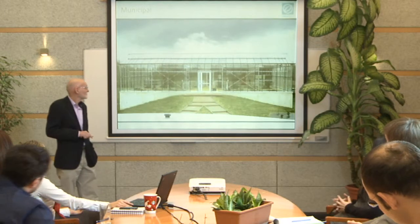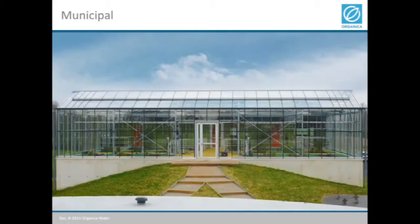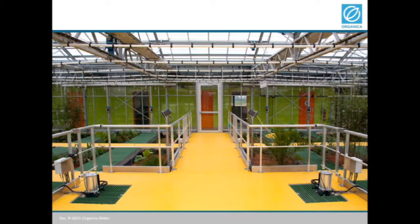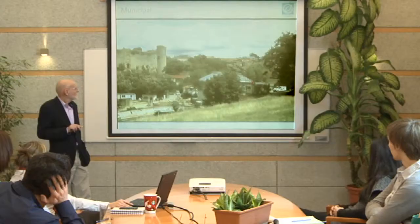A few examples I'd like to show — all municipal. This was one of the first plants built in France, in the Loire Valley, about a kilometer away from one of the nice châteaus. Our French friends have a very good sense of taste and color, as you can see from this picture. This is another example, still under construction in a little town in southwest France — you can see it's a historical setting.